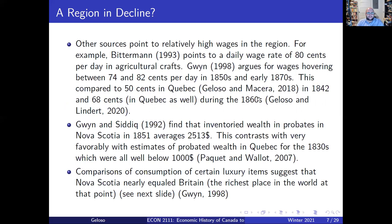When you keep digging into the evidence, you have more reasons to question the decline narrative. For the 1850s, 60s and 70s, wages in Nova Scotia hover between 74 and 82 cents per day. When you compare with Quebec, it's between 50 and 68 cents per day for average common laborers — basically unskilled workers hired for a day's grunt work. So Atlantic Canada is clearly richer than Quebec.